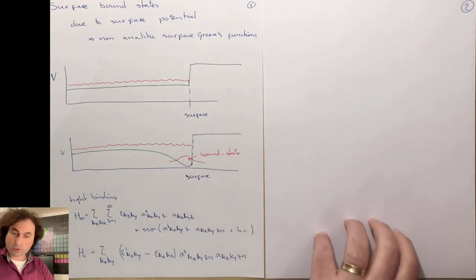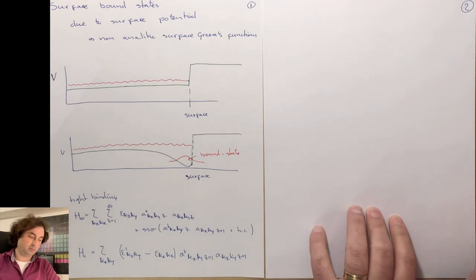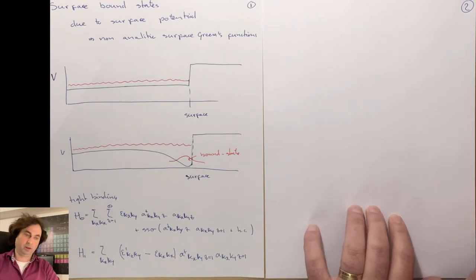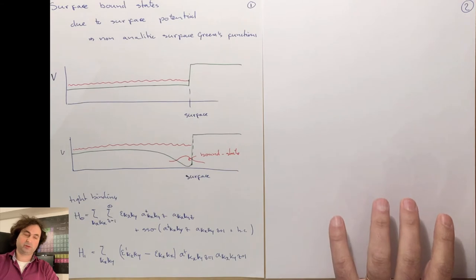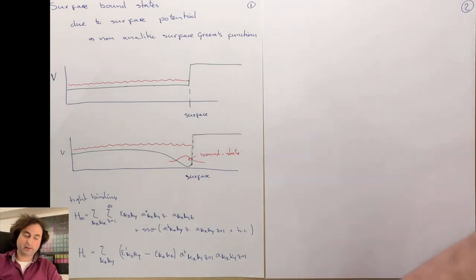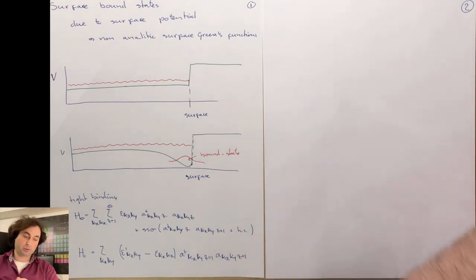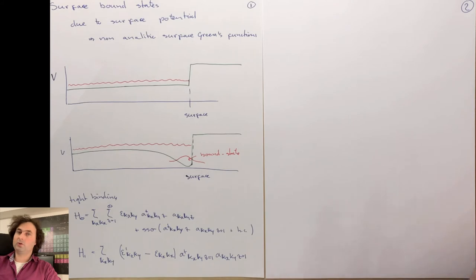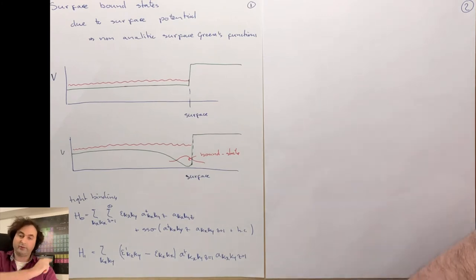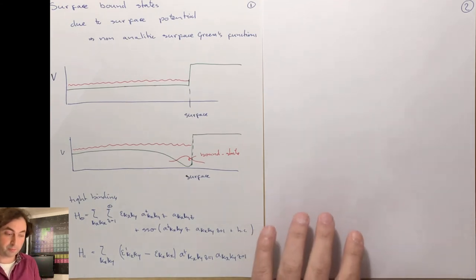Now, in order to solve this, there are a few different ways that you can calculate your Green's functions and your local Green's functions. You can build it up with a continued fraction method, which is of course nice and very intuitive. But when you build this up with a continued fraction method, it's not so easy to answer the question: do I get a bound state or not? Actually, when you use the Dyson equation, then we have a very nice way to determine if you get a surface bound state or not.